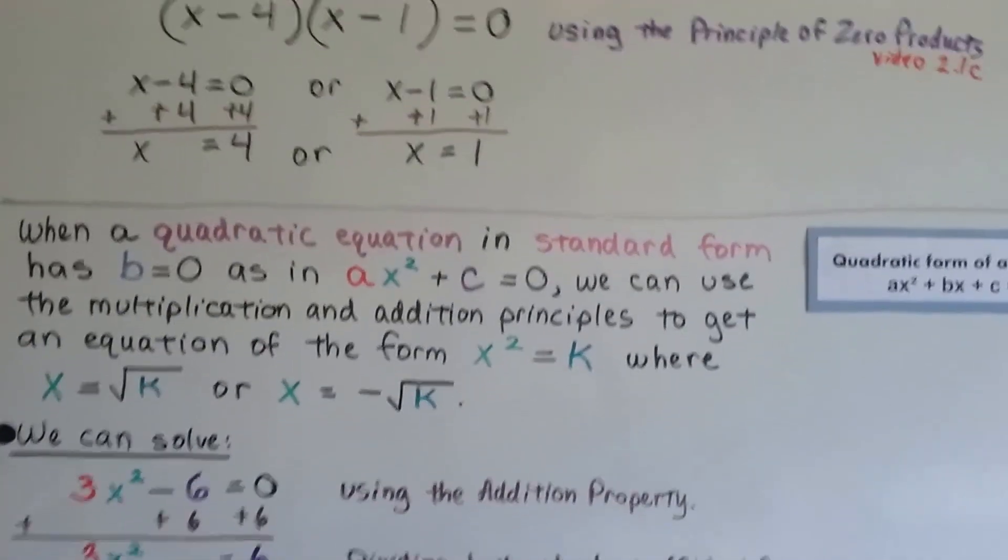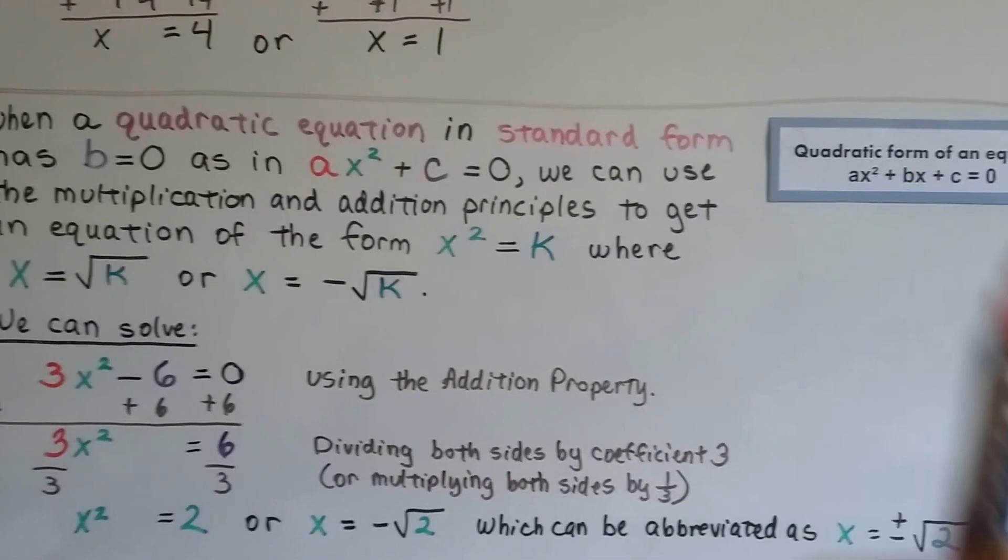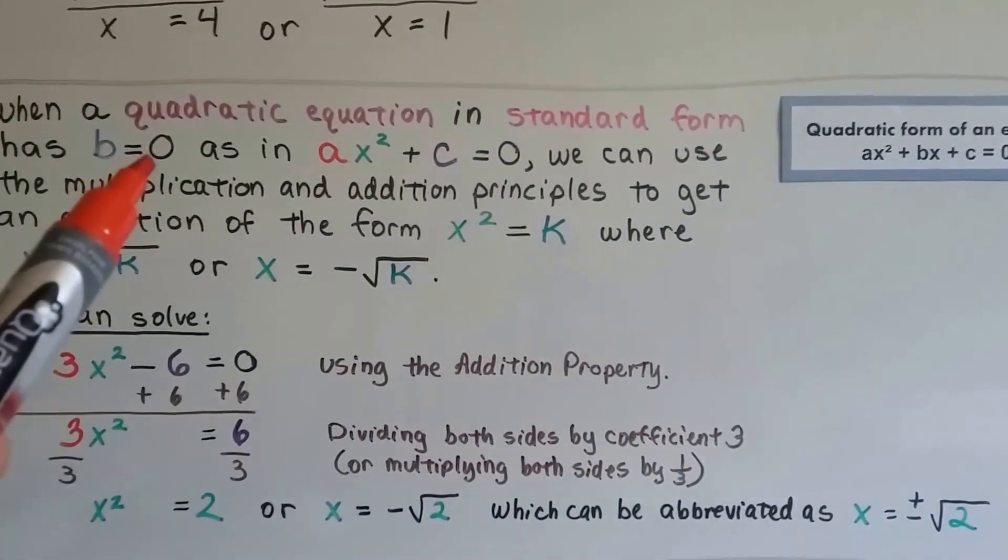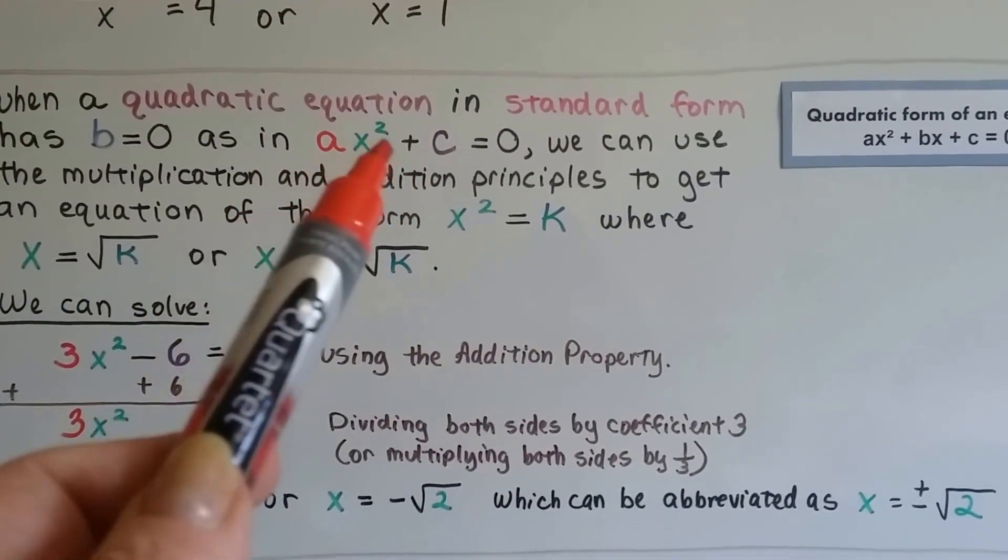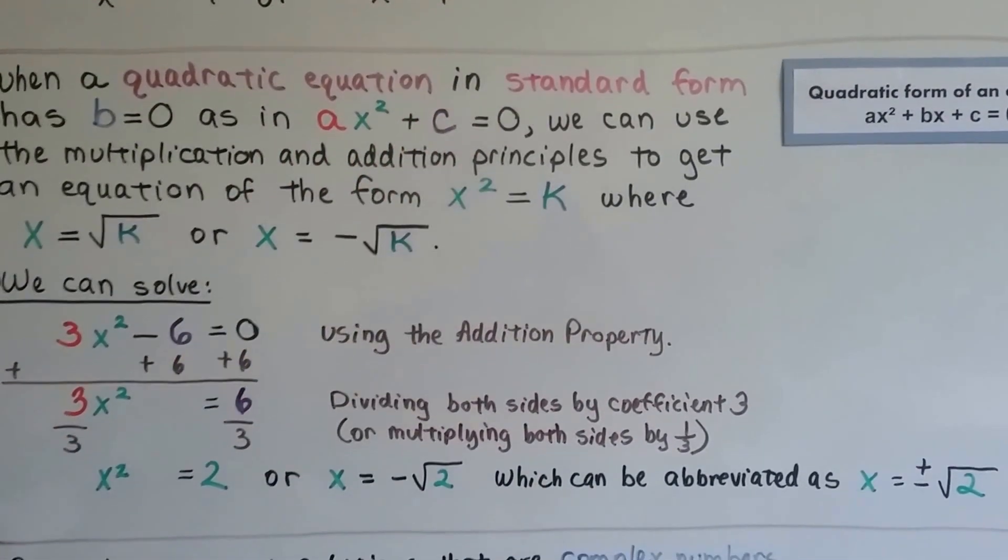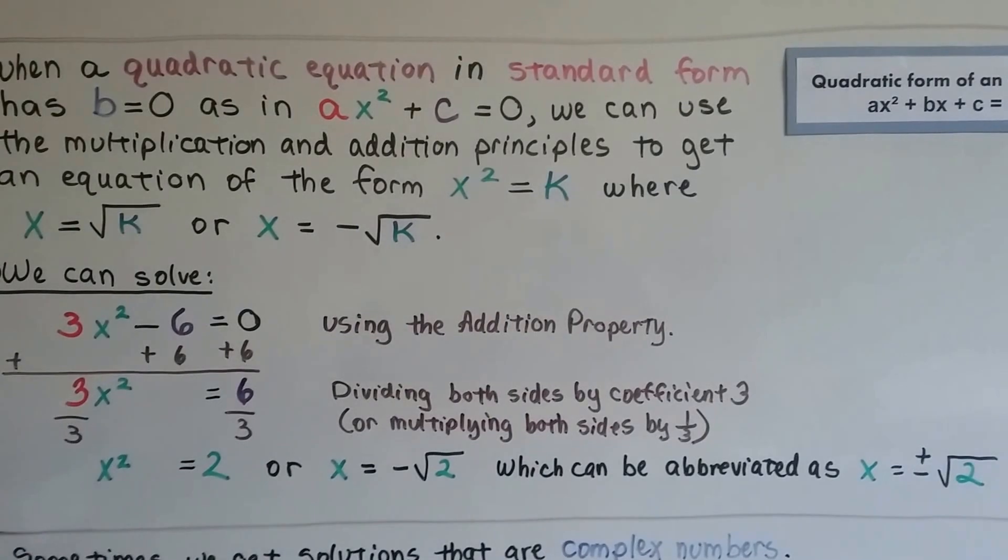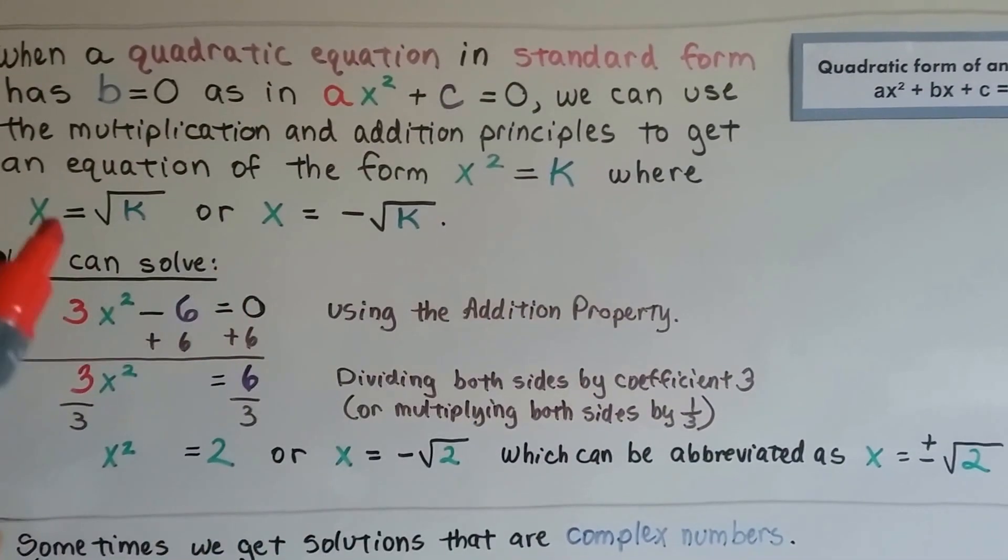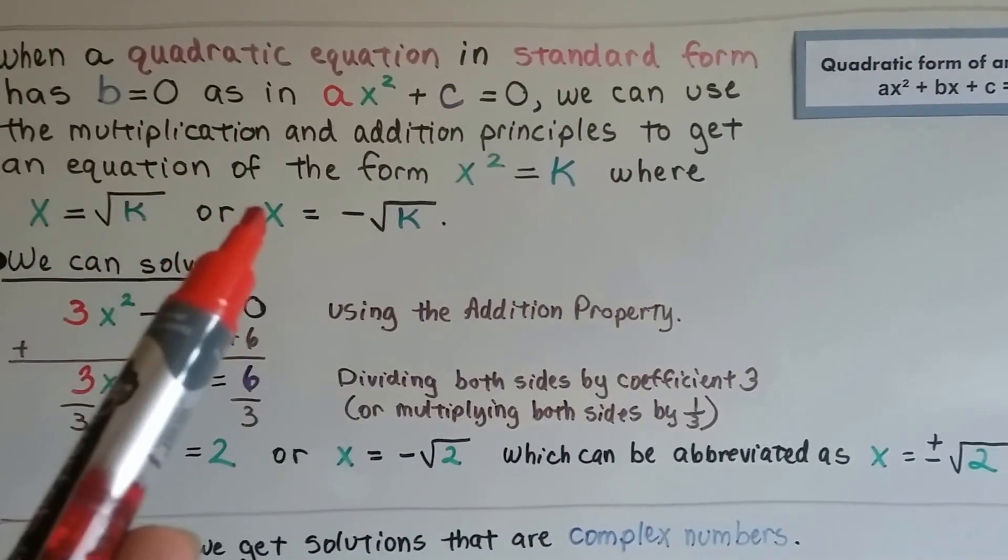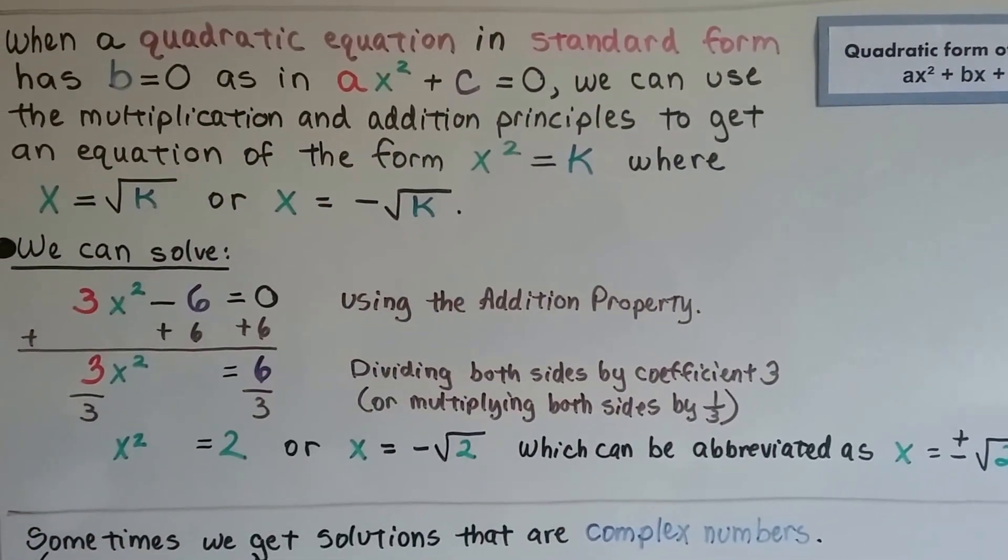When a quadratic equation in standard form has b that equals 0, so see, there's no b value, it's a 0. So it's ax squared plus c equals 0. We can use the multiplication and addition principles to get an equation in the form of x squared equals k, where x equals the square root of k, or x equals negative square root of k.